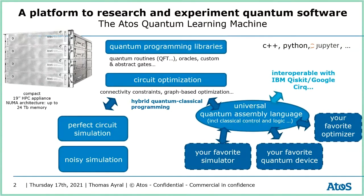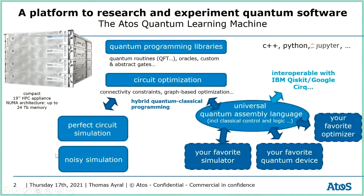So our core job is basically to integrate classical processors and now quantum processors into larger systems. We have all these circuit optimization libraries provided within QLM. Once you have optimized your circuits, you can simulate them on a classical computer. This is the QLM, a big machine with a lot of RAM where you can do very powerful perfect circuit simulations as well as noisy simulations.